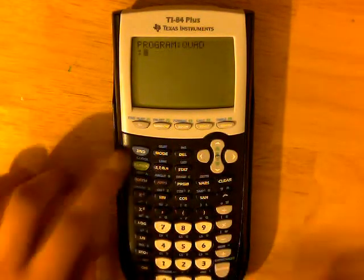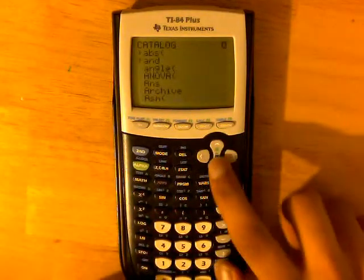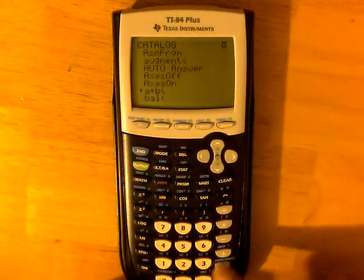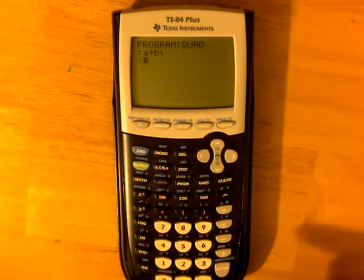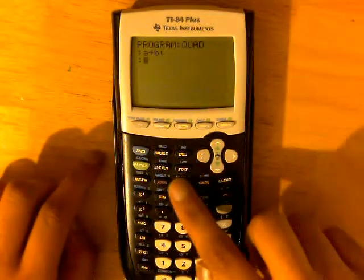Enter. And then click Second Zero, scroll all the way down to A-plus-B-I, there it is, Enter. And then click Enter again, and now click Program.